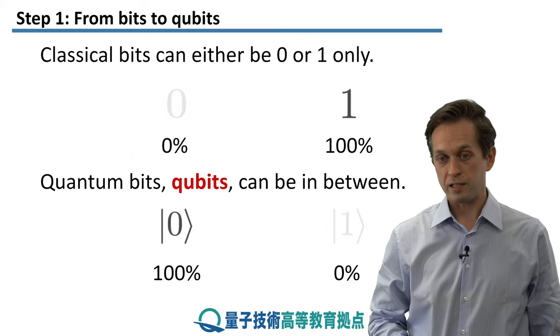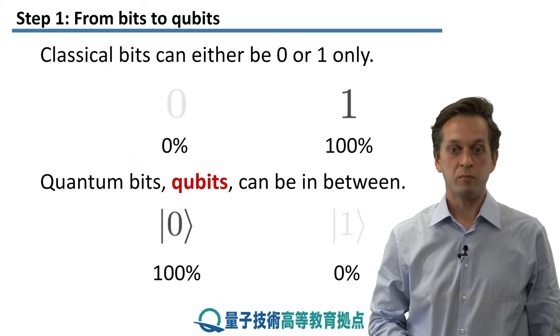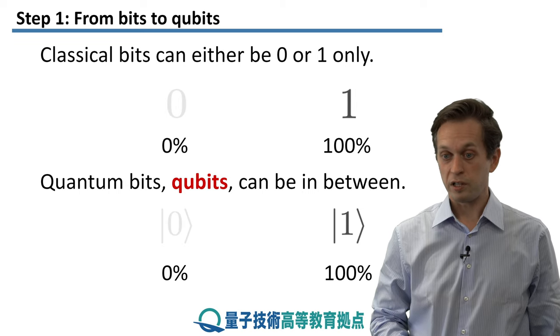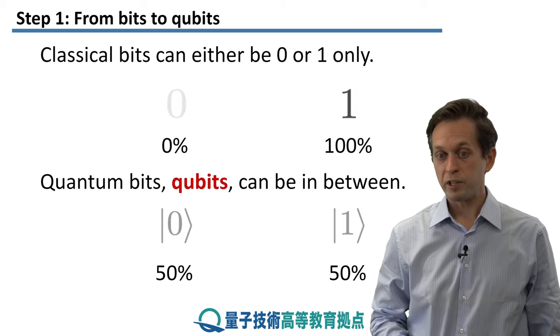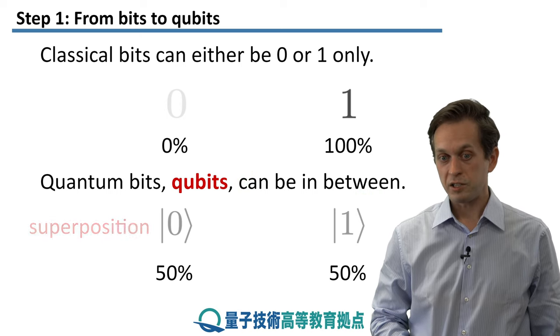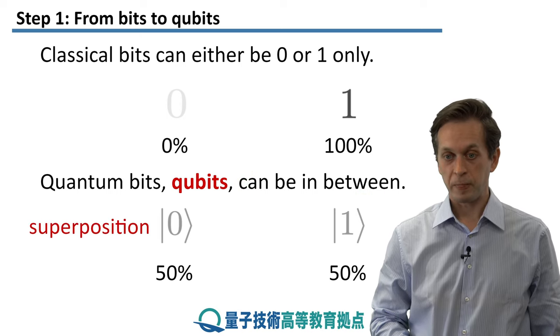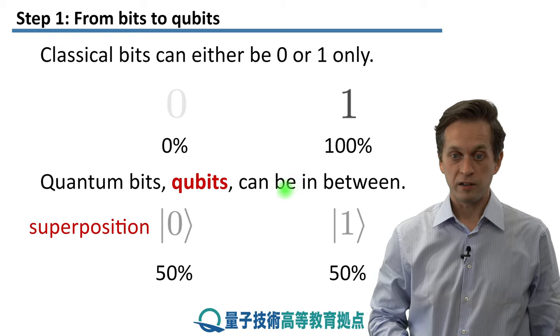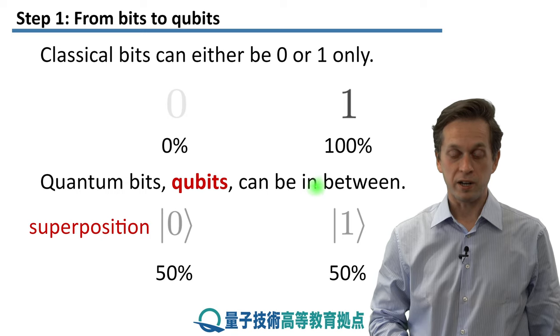Whereas the quantum bit, also called a qubit, can be anything in between. It can be 100% zero, it can also be 100% one, but it can also be 50% zero and 50% one. And such a state is called a superposition. It's not that we don't know what the state is. It really is neither zero nor one, but it's somewhere in between.